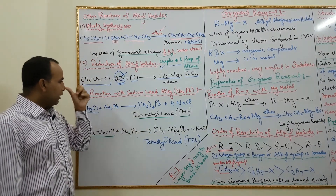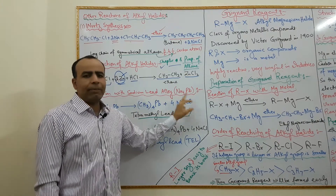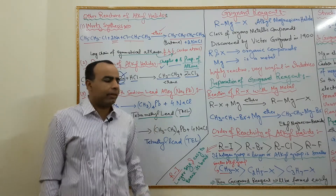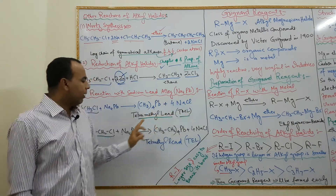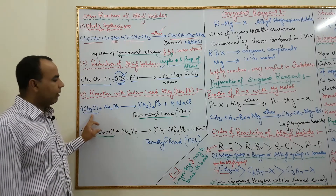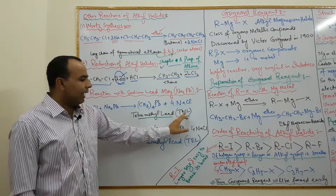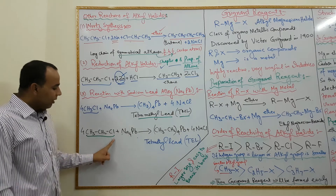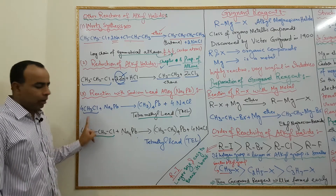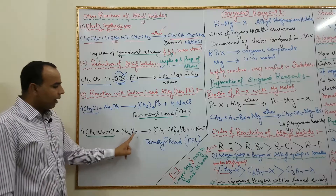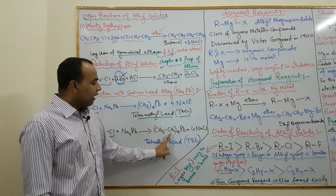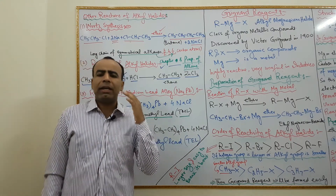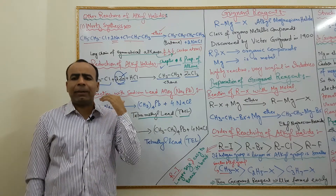The next reaction involves sodium lead alloy, Na₄Pb. An alloy is a combination of two or more metals. When sodium lead alloy is reacted with methyl chloride, tetra methyl lead (TML) is produced and sodium chloride is also formed. In the second step, when ethyl chloride is reacted with sodium lead alloy, tetra ethyl lead (TEL) and sodium chloride are produced.